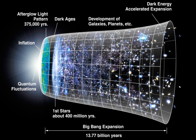Despite being extremely dense at this time — far denser than is usually required to form a black hole — the universe did not re-collapse into a black hole. This may be explained by considering that commonly used calculations and limits for gravitational collapse are usually based upon objects of relatively constant size, such as stars, and do not apply to rapidly expanding space such as the Big Bang.